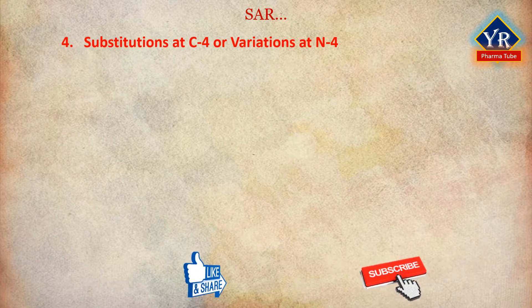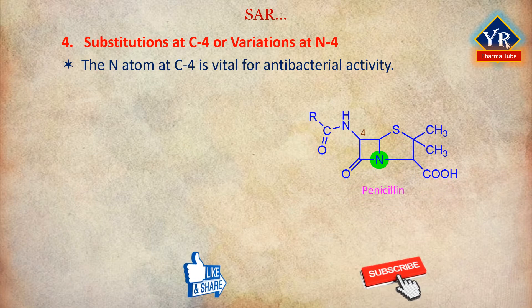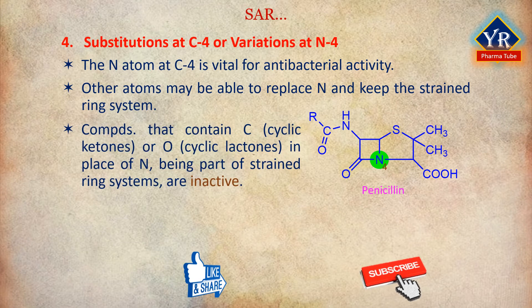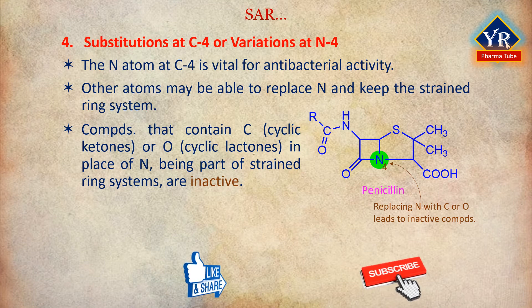Number 4: Substitutions or variations at N4. The nitrogen atom at the ring junction, that is at position 4, is vital for antibacterial activity. The nitrogen atom contributes to the reactivity of the beta-lactam carbonyl center. In theory, other atoms may be able to replace nitrogen while maintaining the prerequisite of a strained ring system. However, compounds that contain carbon or oxygen in place of nitrogen, although being part of strained ring systems, are inactive. The nitrogen center is crucial for a number of reasons, including its contribution to ring strain partially via resonance, as well as for factors pertaining to enzyme recognition.